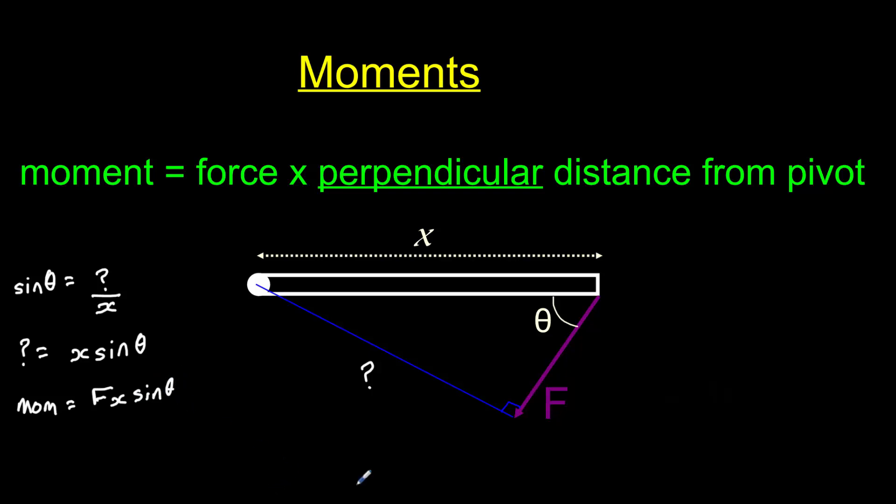An alternative way of approaching this, and my preferred option, is to consider F as a vector. And you can see here that the force can be resolved into its vertical component. In this case, the vertical component is equal to F sine theta. So we can calculate the moment as F sine theta, the perpendicular component of the force, multiplied by the distance X, which can also be simplified to F, X, sine theta.